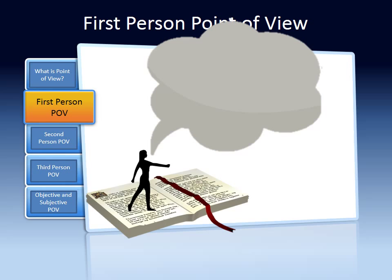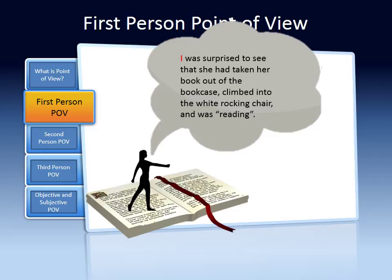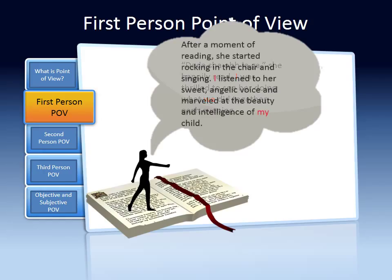Here is a visual representation to help you remember that first-person point of view is when a character in the story is telling the story. I heard some chatter coming from my daughter's bedroom. I wondered what she was doing in there while I was getting ready for work. I was surprised to see that she had taken her book out of the bookcase, climbed into the white rocking chair, and was reading. She happily read. I was thrilled to see her doing what we did together each evening. After a moment of reading, she started rocking in the chair and singing. I listened to her sweet angelic voice and marveled at the beauty and intelligence of my child.